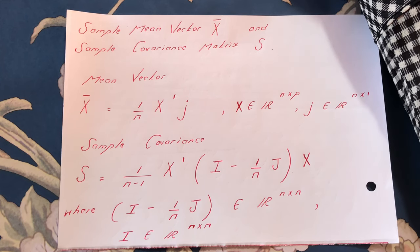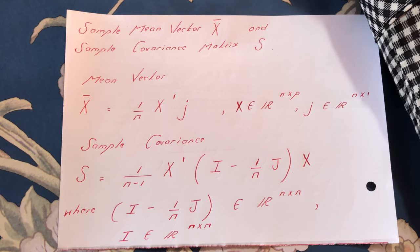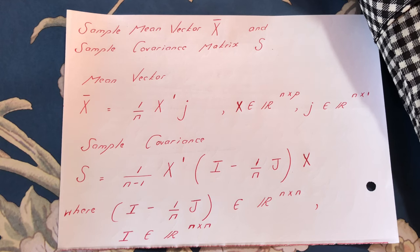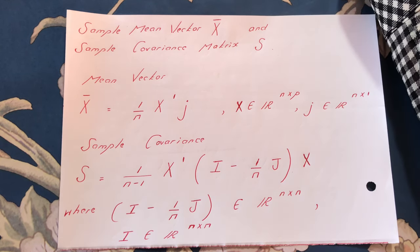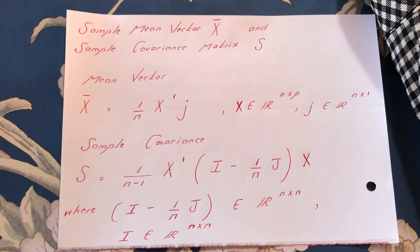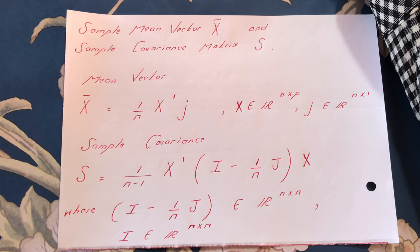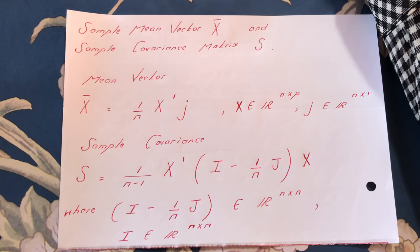The sample covariance is given by 1 over n minus 1, times X-dash multiplied by (I minus 1 over n times capital J) times X, where n is the number of observations, X-dash is the transpose of X, capital I is the identity matrix of order n by n, and capital J is a square matrix of 1s of order n by n.